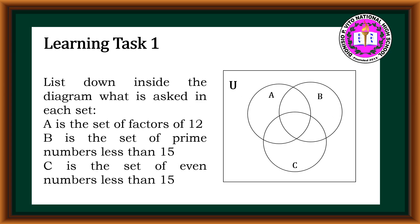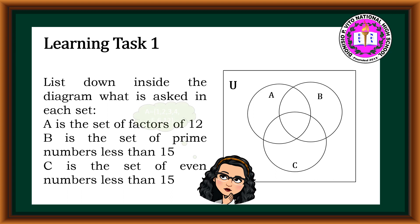All we have to do is list down inside the diagram what is asked in each set. Set A is the set of factors of 12. The factors of 12 are 1, 2, 3, 4, 5, 6, and 12.